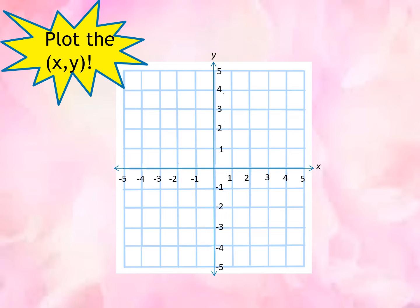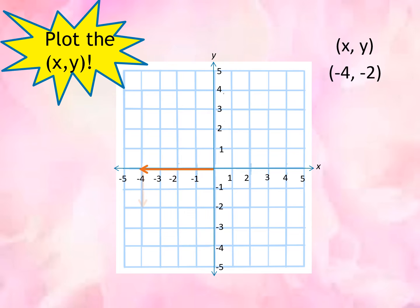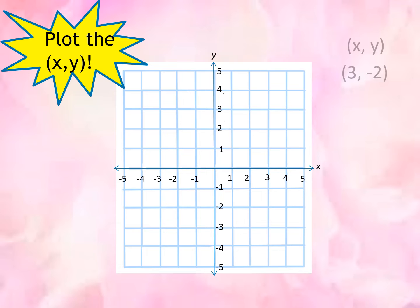Now let us have another one: negative 3, 5. Now let us have another one: negative 4, negative 2. Now let us have 3, negative 2.